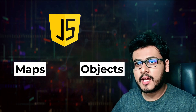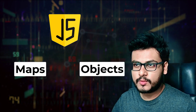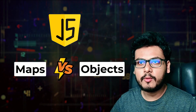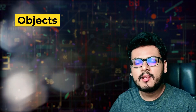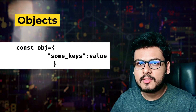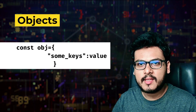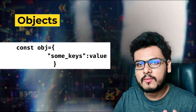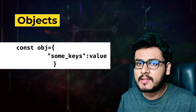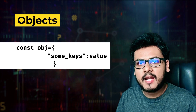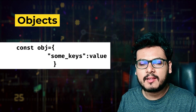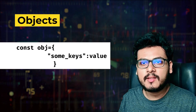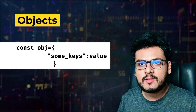In JavaScript, maps and objects are two similar data structures but with different use cases. Let us discuss the difference between both and which one to use when. In JavaScript, it is very common to use objects when we have to map keys to certain values. For example, have a look at this code: `const obj` equals an object with `some_key` assigned to a string value.